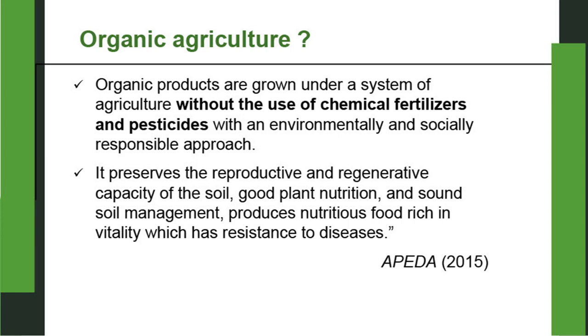Now let us see some definitions of organic agriculture. According to APEDA: organic products are grown under a system of agriculture without the use of chemical fertilizers and pesticides, with an environmentally and socially responsible approach. It preserves the reproductive and regenerative capacity of the soil, ensures good plant nutrition and sound soil management, and produces nutritious food rich in vitality with resistance to diseases. This means organic farming is a genuinely holistic approach considering all components — soil, plant, human beings — nobody should be unhappy.